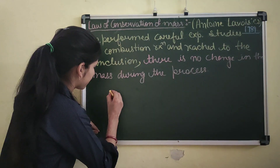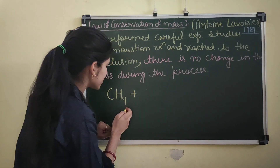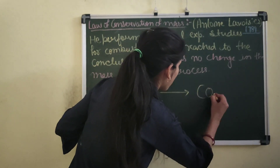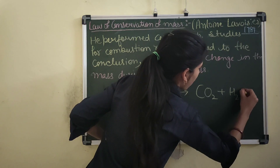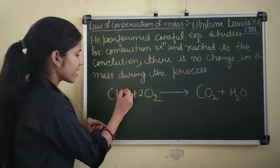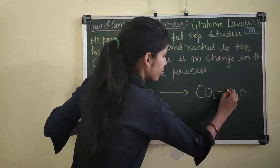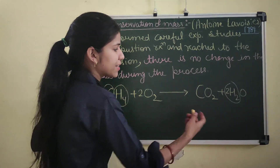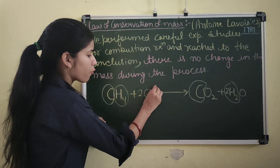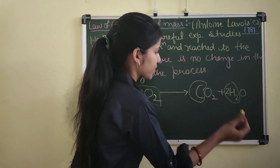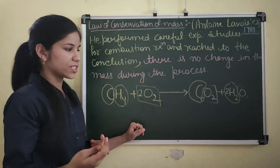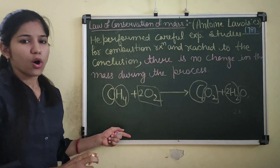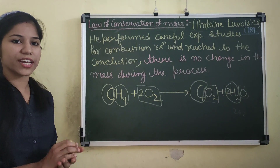For example, consider the combustion reaction of methane: CH4 + O2 → CO2 + H2O. In the starting reaction there are 4 hydrogen atoms, and at the end of the reaction there are also 4 hydrogen atoms. There is 1 carbon atom before, and 1 carbon atom after. There are 4 oxygen atoms before, and 2 + 2 = 4 oxygen atoms after. So total mass after the reaction and before the reaction remains the same.